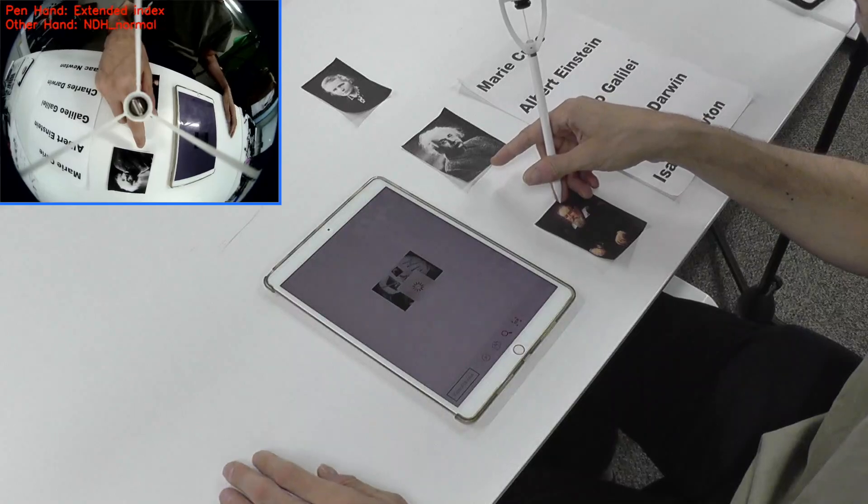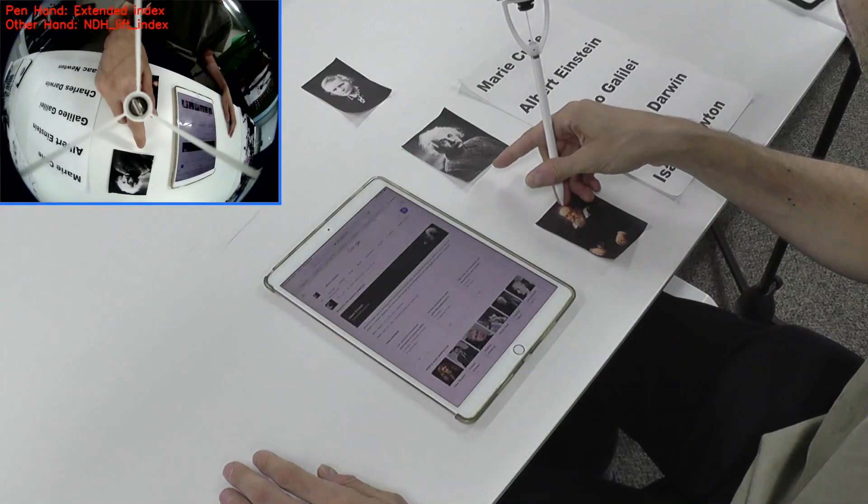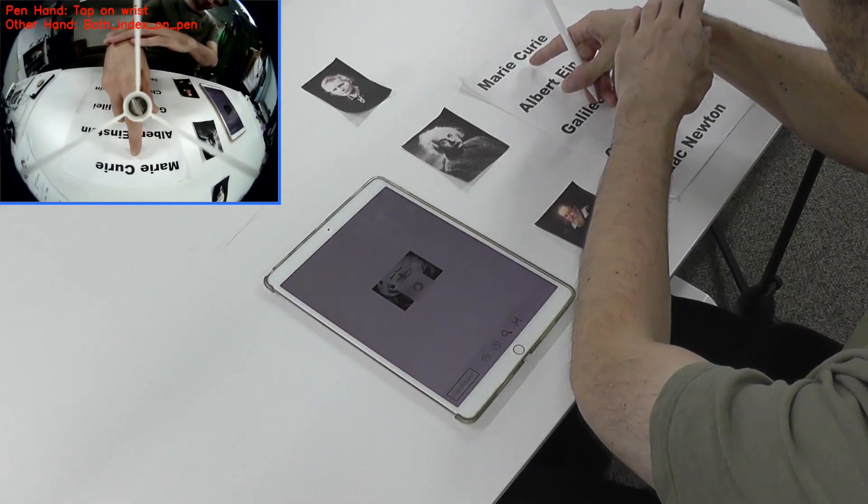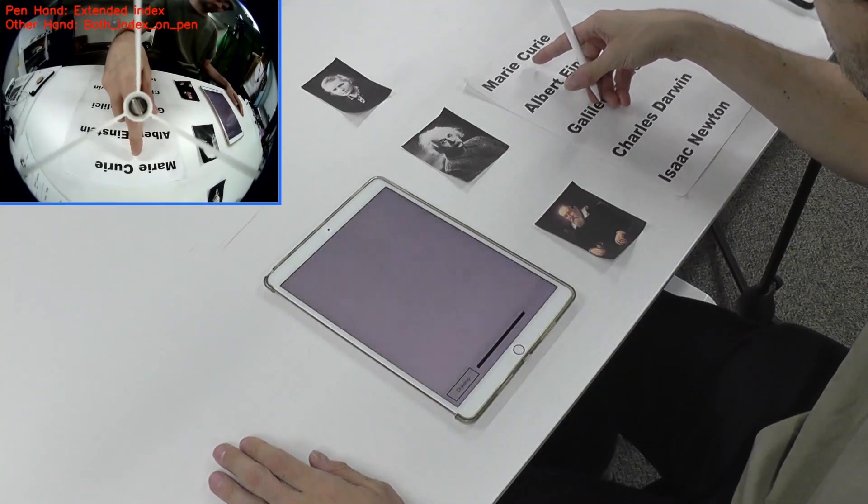The mobility of the pen and its ability to see the environment can be used to capture surrounding content. For instance, the camera can be pointed at documents around the tablet for pick and drop or to perform searches.